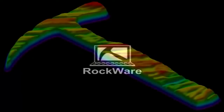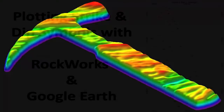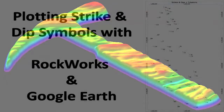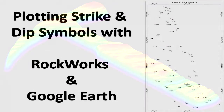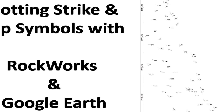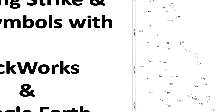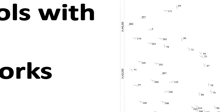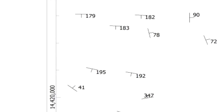Rockworks includes several utilities for plotting strike and dip symbols depicting bedding planes, foliations, focal mechanisms, and so on. The simplest is the strike and dip map program, which produces conventional two-dimensional maps.